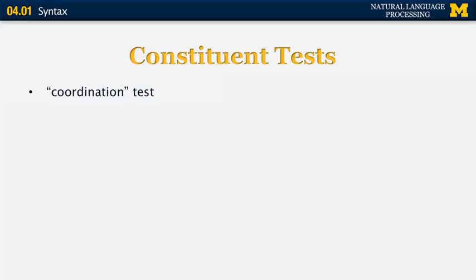There are many types of constituent tests in the linguistics literature. All of these tests can be violated, but if two phrases pass multiple tests, chances are very high that they belong to the same constituent type. The coordination test tells us that if we combine two constituents with a conjunction, they are of the same type.